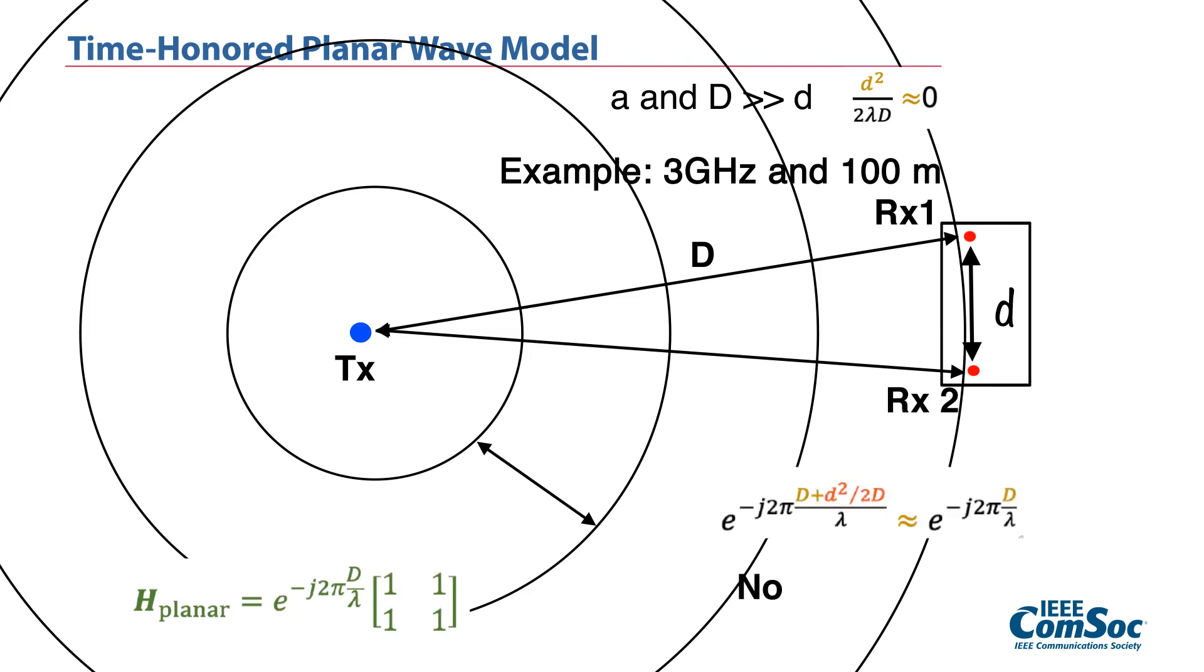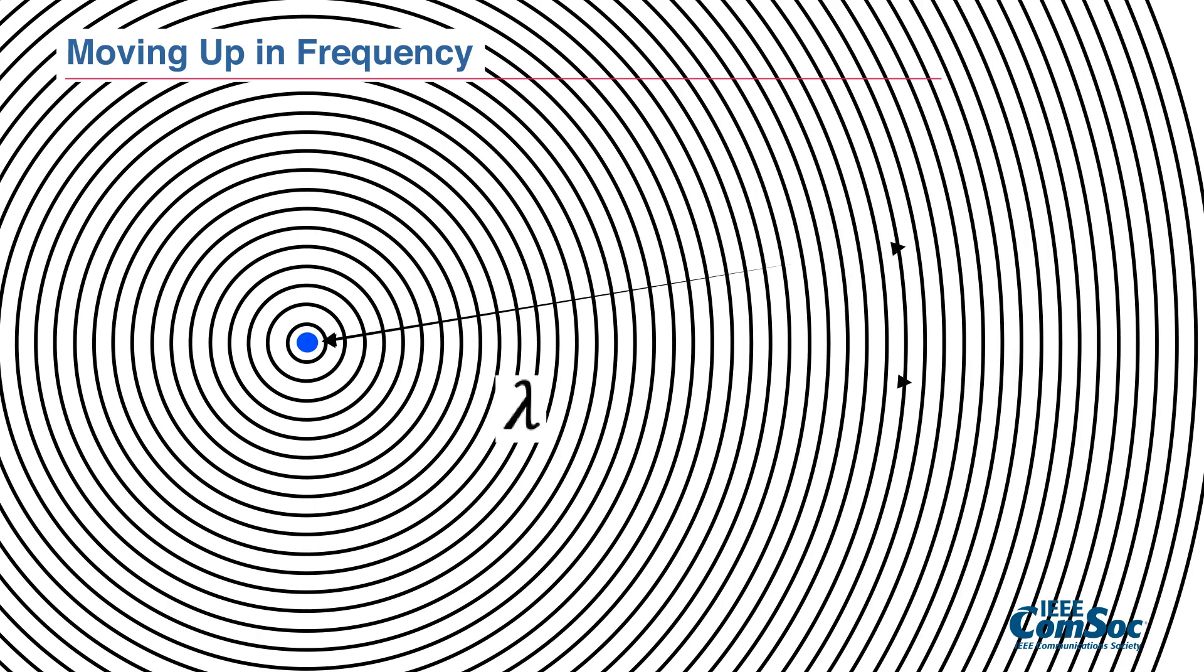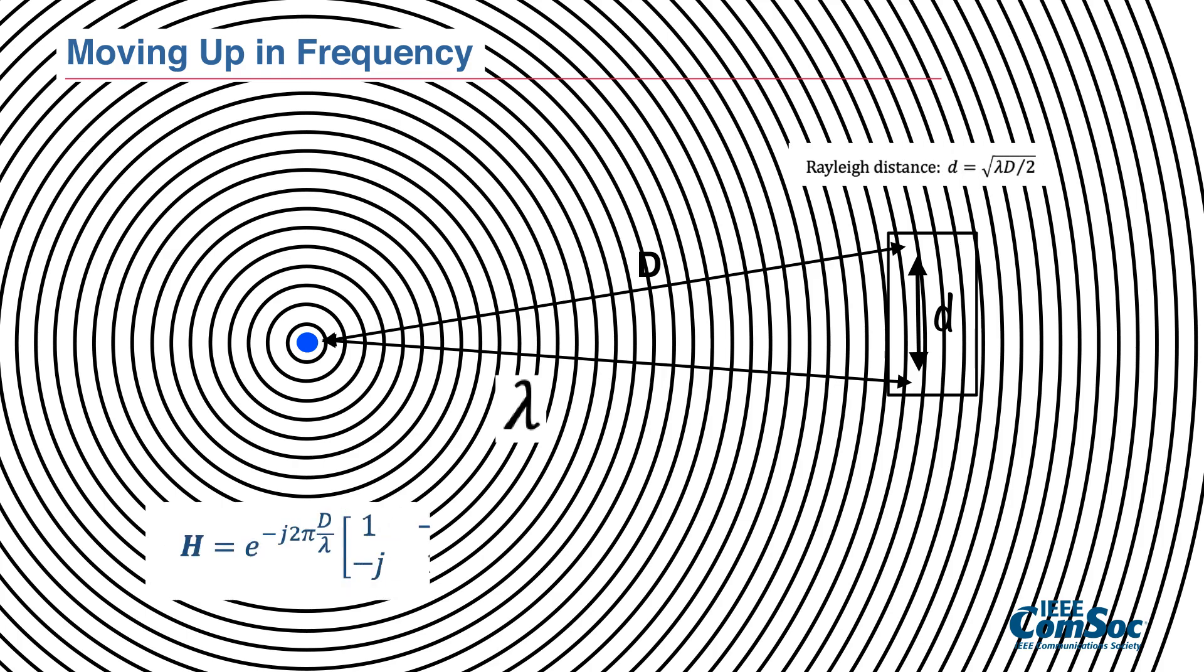Therefore, we cannot use any MIMO multiplexing transmission because the rank of the line-of-sight MIMO channel collapses to 1. However, as the frequency goes up, the wavelength and the communication range shrink. So, with small inter-antenna spacing, the channel rank can be larger than just one. In particular, when we design inter-antenna separation with so-called Rayleigh distance,